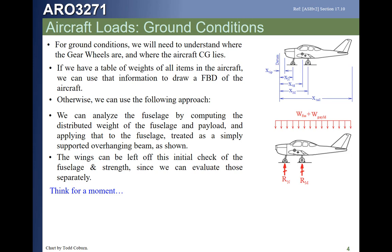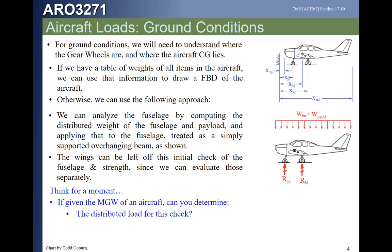That wing load also goes into the fuselage and is carried in the gears, so our load distribution between the forward and aft gear will be inaccurate with this approximation because it doesn't account for the extra load coming from the wing. But this can be used to size a lot of our structures. If you know the max gross weight, the distributed load you apply is 50% divided by the length of the aircraft — that's X_tail minus X_tip. That's your distributed load, and we can then calculate the reactions at the wheels and draw the shear and moment diagram.